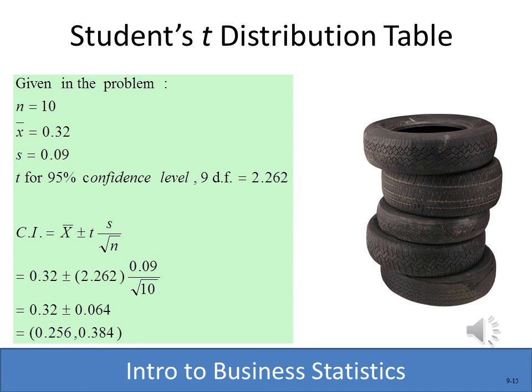With n = 10, x-bar = 0.32, sample standard deviation = 0.09, and t = 2.262, we calculate a margin of error of 0.064. Adding and subtracting that from the sample mean gives a 95% confidence interval of 0.256 on the low end and 0.384 on the high end.